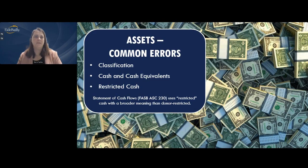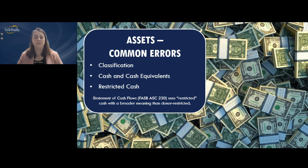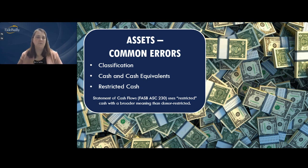Common errors in cash classification: there is no specific definition of what constitutes restricted funds. Net assets restricted for donors for operating activities are typically not shown as restricted since they're for general purposes. However, amounts restricted for long-term purposes such as endowments would be shown as restricted. Other items typically restricted include deposits held in escrow, debt service funds, split interest agreements, and endowments. Understanding how your cash is being held is crucial to breaking it out properly.